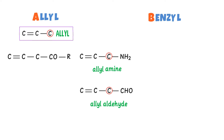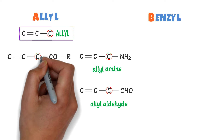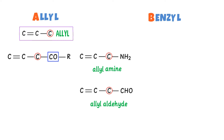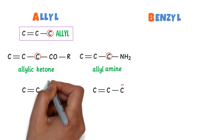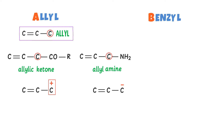Fifthly, consider this organic compound — this is the Allyl carbon, and this is the functional group of ketone, where R is an alkyl group. So I write Allyl ketone. Sixthly, consider these two organic compounds. In the first case, a positive charge is present at the Allyl carbon, so I get Allyl carbocation. In the second case, a negative charge is present at the Allyl carbon, so I get Allyl carbanion. Hence by this way, we can name Allyl organic compounds.